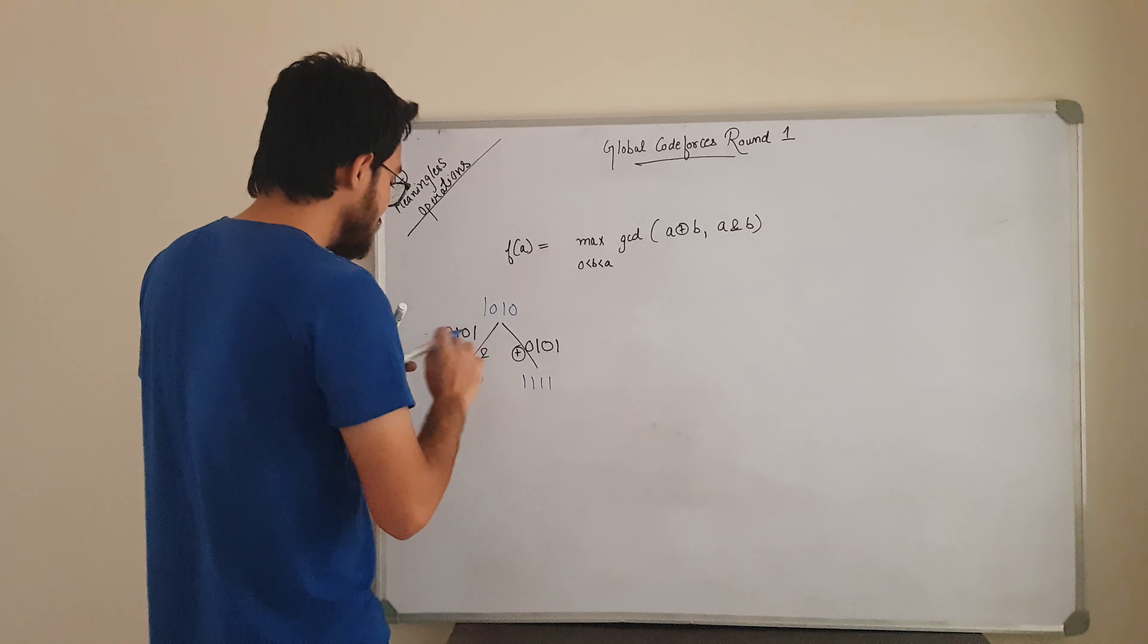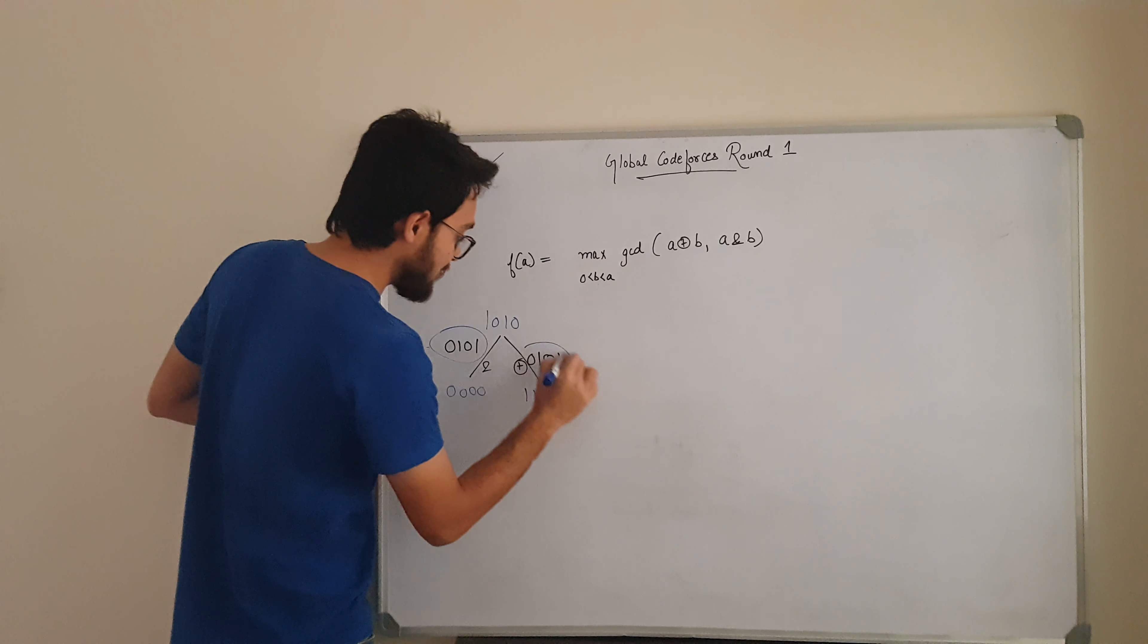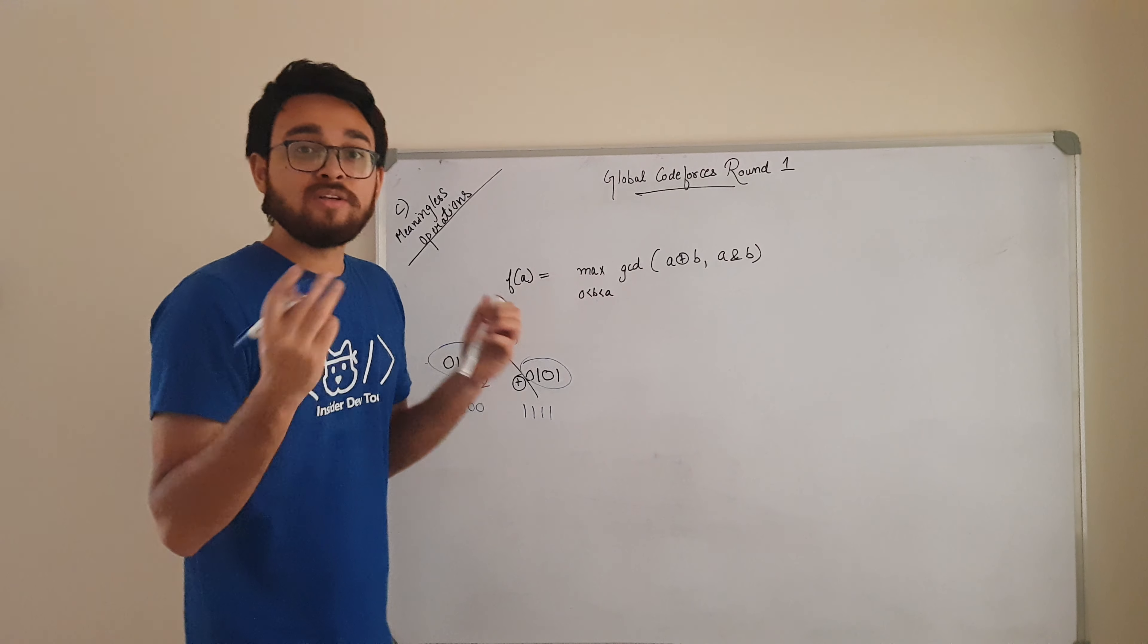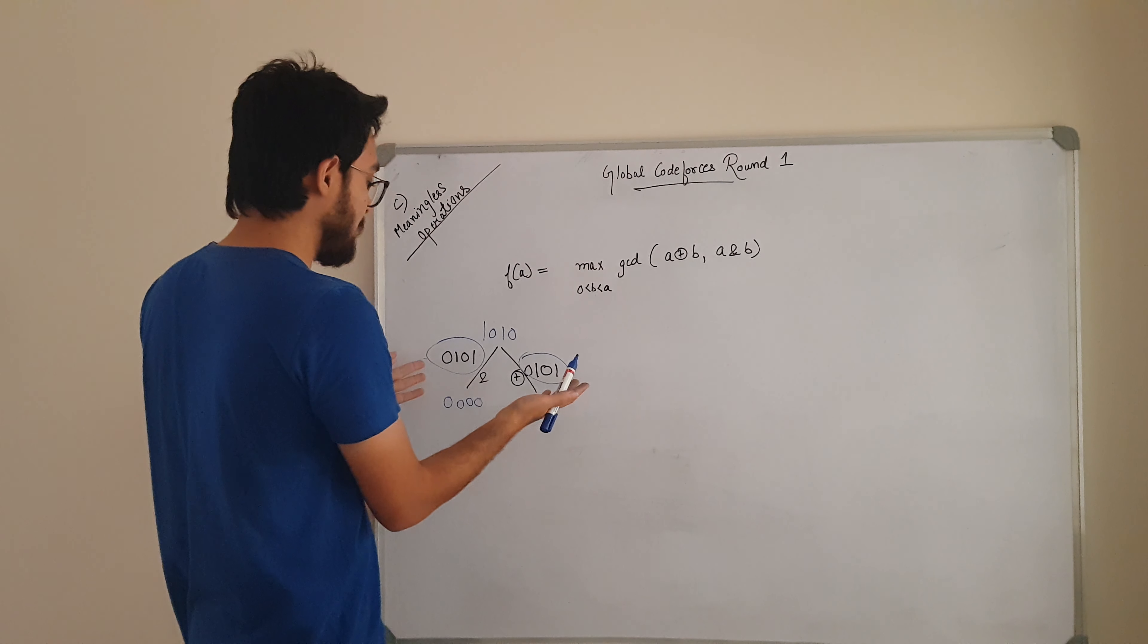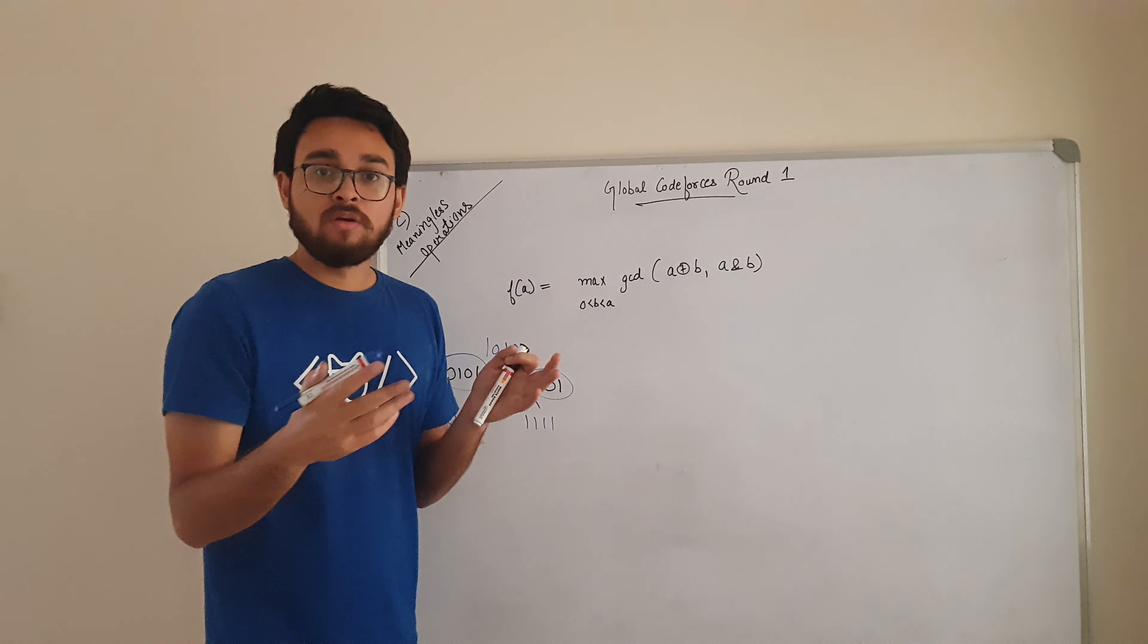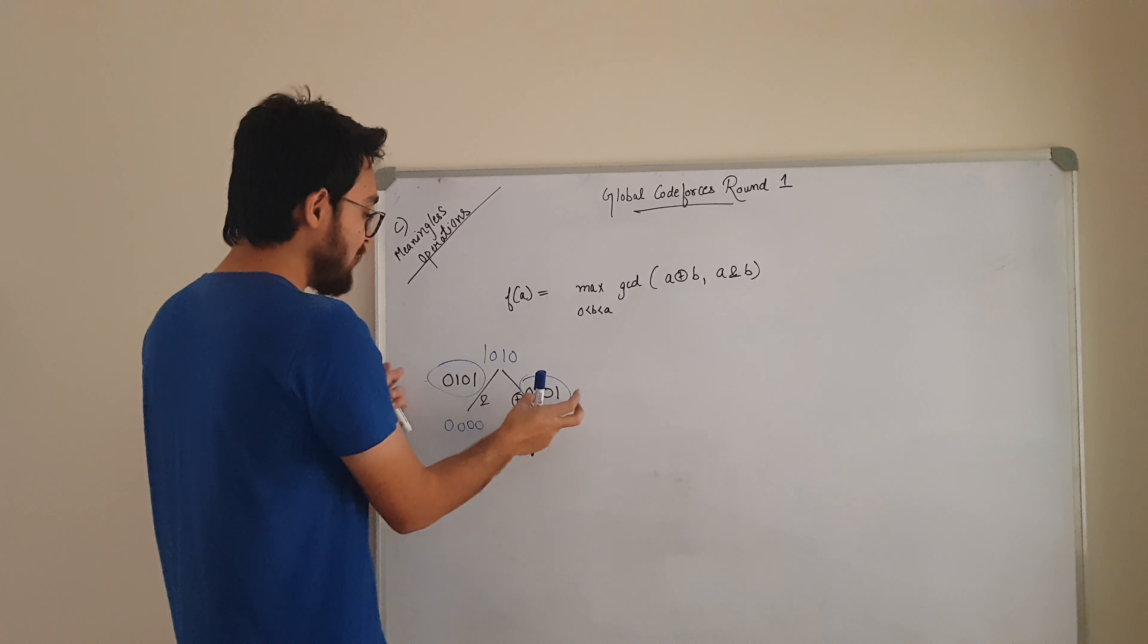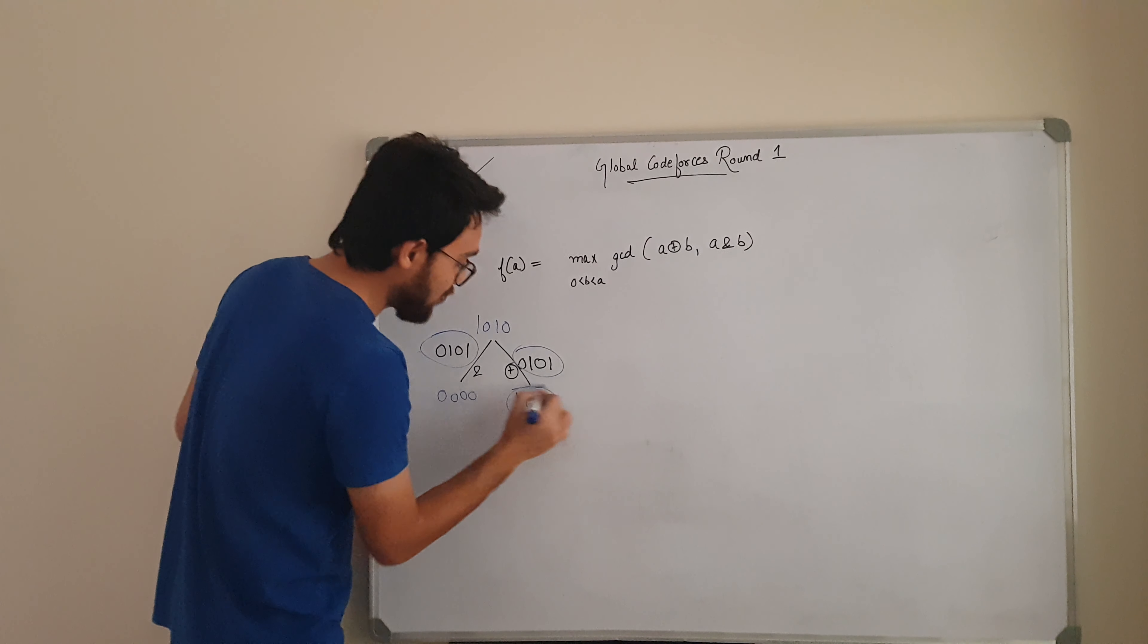Now, a good thing to observe is, both these numbers are same. So actually we have found out B. So, for every such situation you have a B which will give you a GCD of all ones.